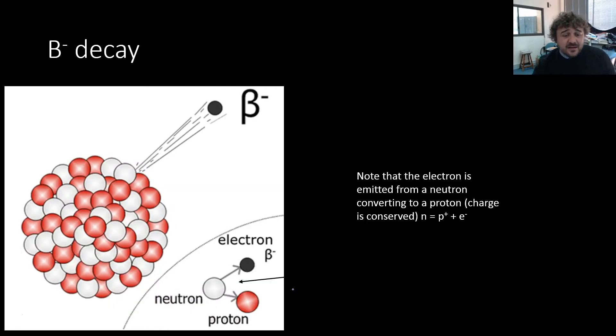This is quickly what beta decay looks like. So you have a neutron here. This is, again, beta negative. It turns into a proton here and an electron. So N equals P plus E. And this way, all our charge is conserved.